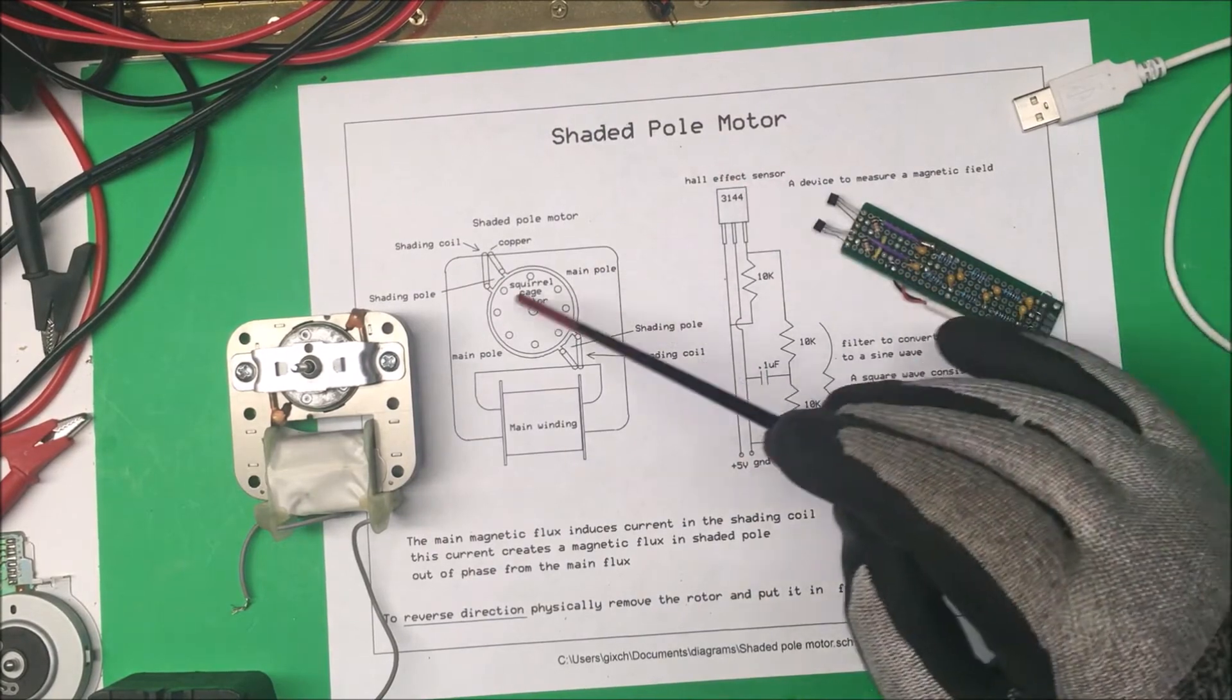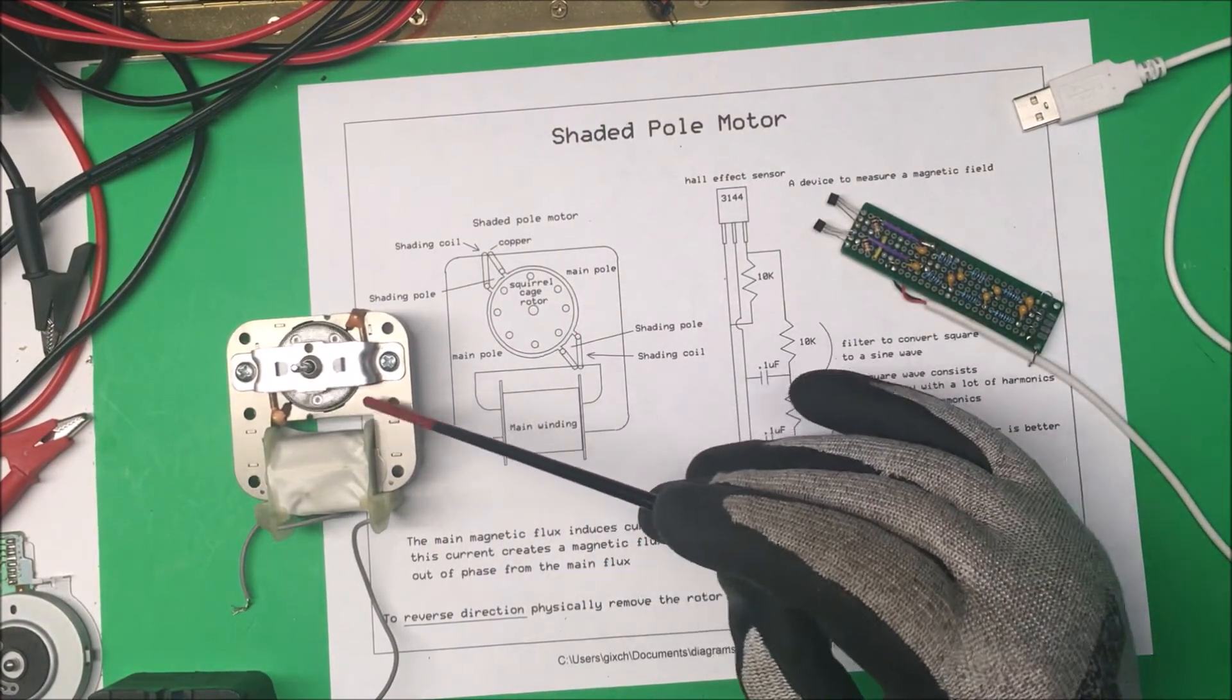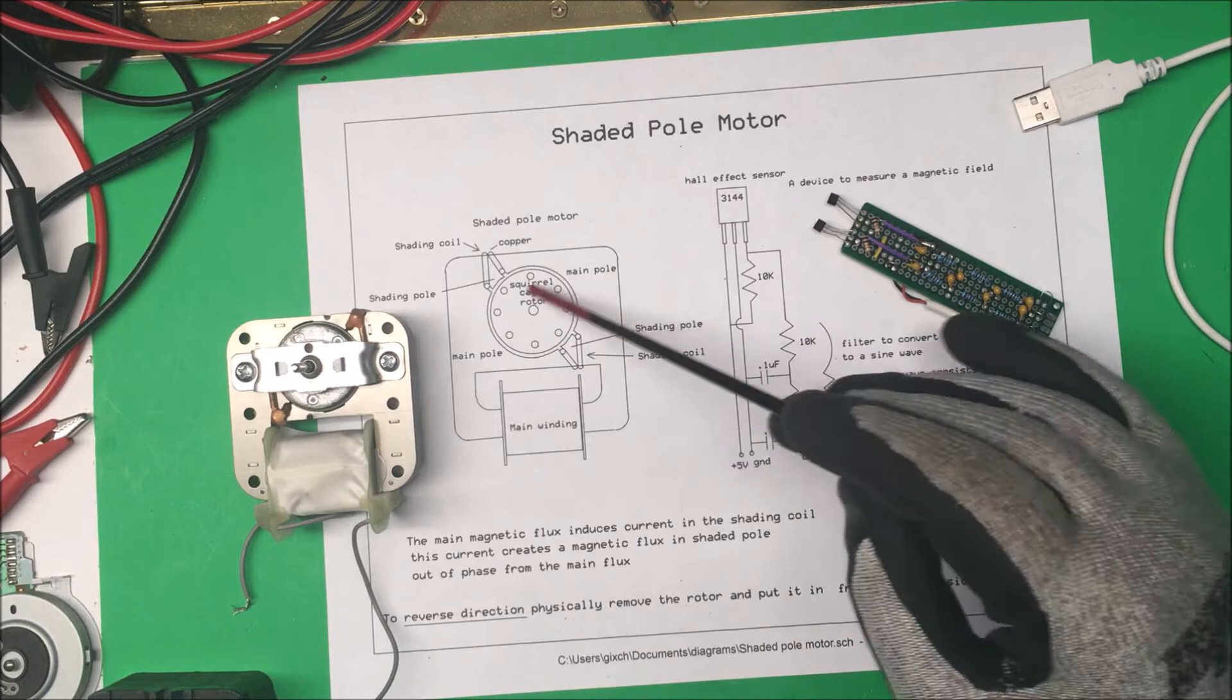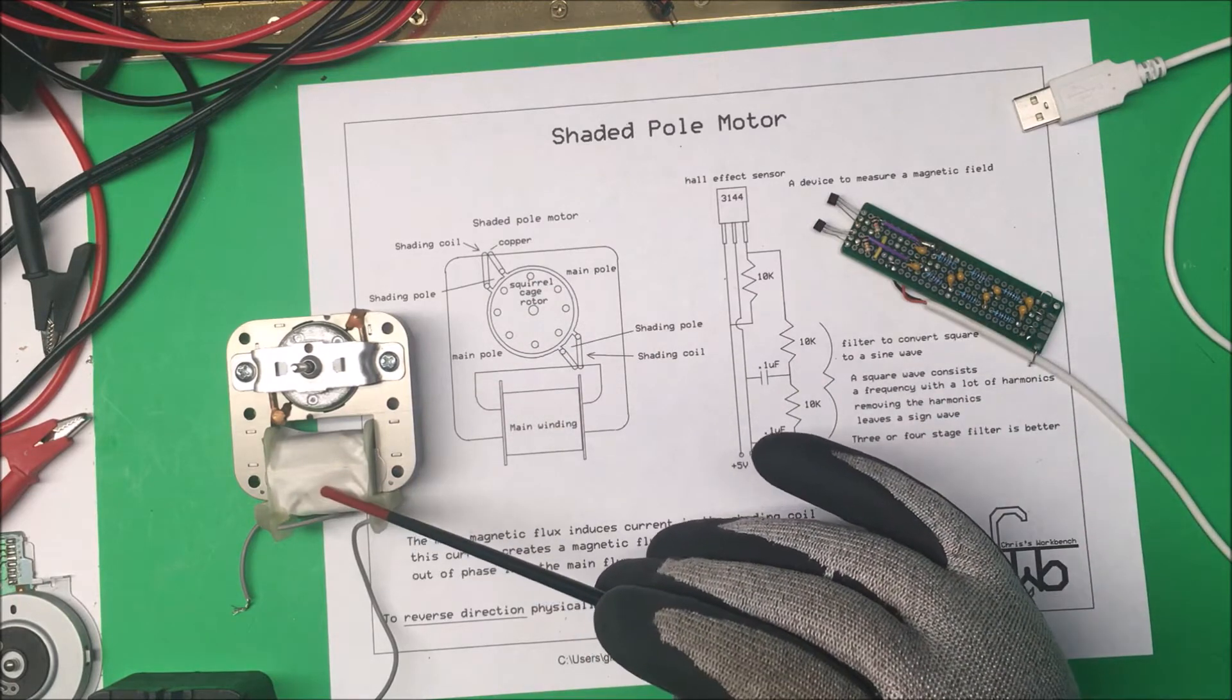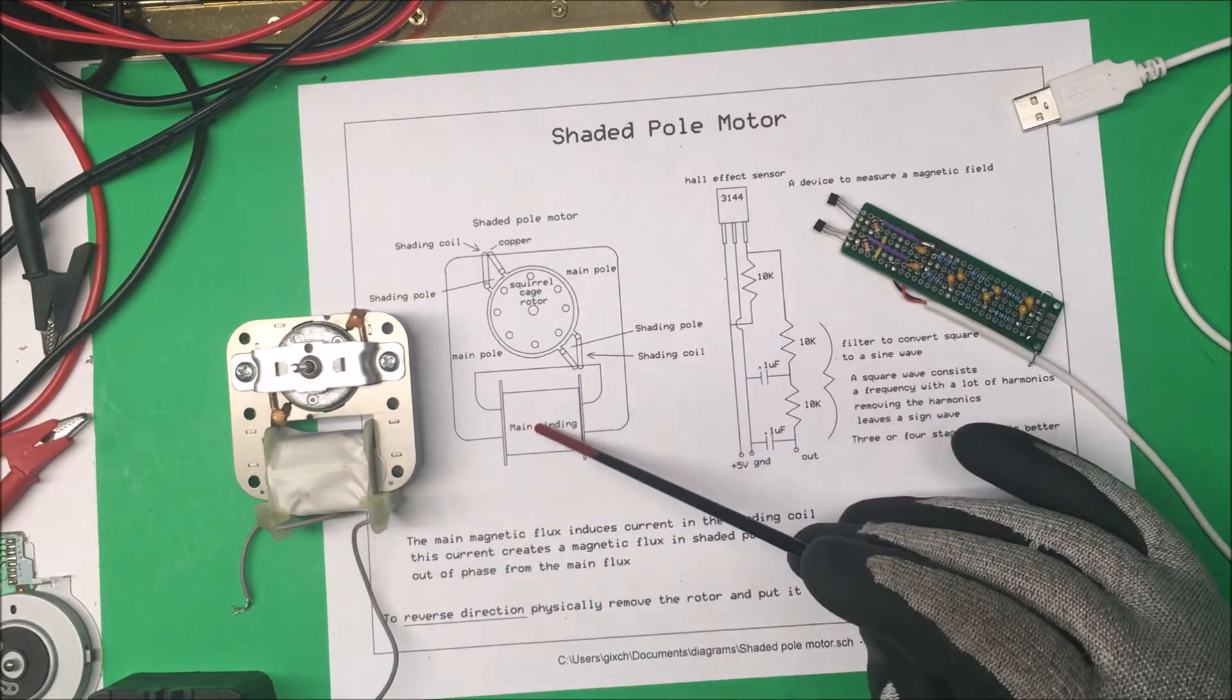Let's take a look at a shaded pole motor. I've got one here, and these are commonly found in fans. Now, how these work is that they have your main coil here - this is your AC coil - and it creates a magnetic